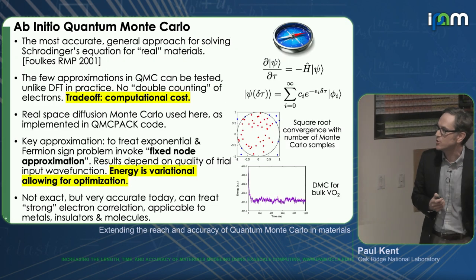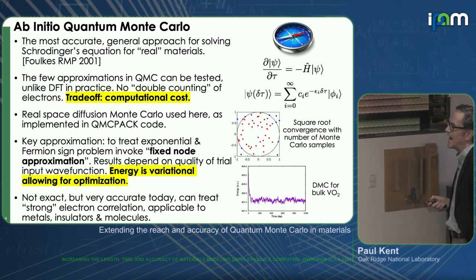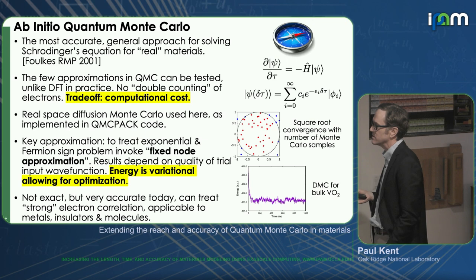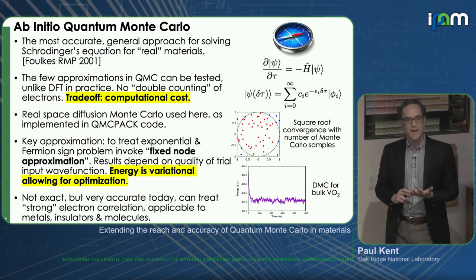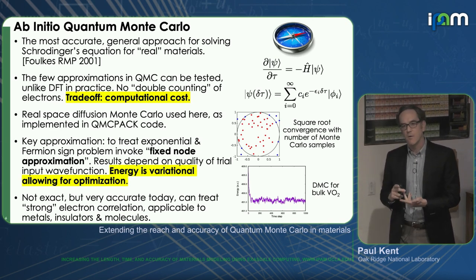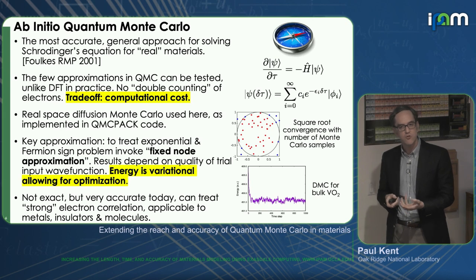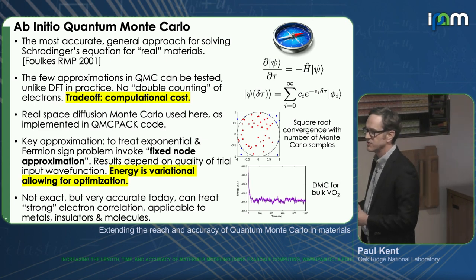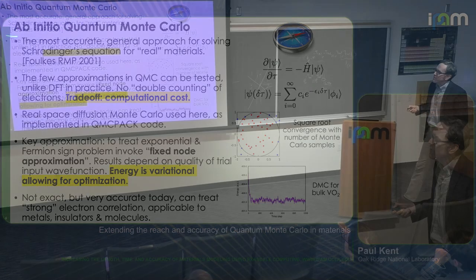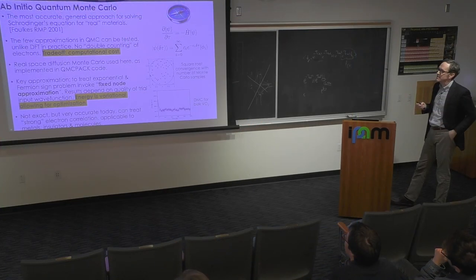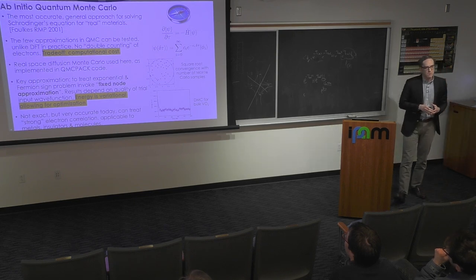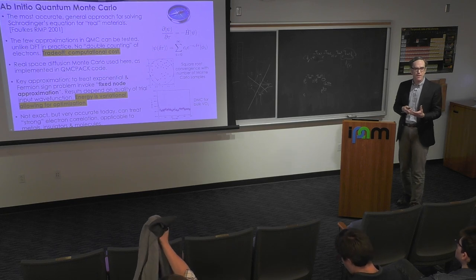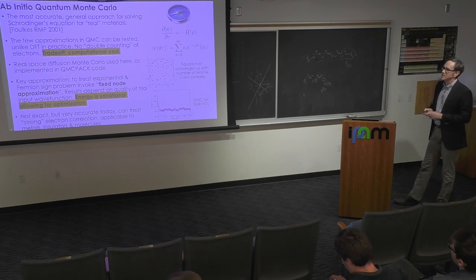That brings me to ab initio quantum Monte Carlo, which I'm just going to sketch out here. This is commonly said to be the most accurate general approach for solving Schrödinger's equation for real materials. What do we mean by general? It can work on metals, insulators, molecules. We're not restricted to high symmetry primitive cells — you can do defects, interfaces, and so on. Of particular interest is that the methods don't have many approximations in them. We know what they are and they are all in principle testable. This sets up the potential to spend more computer time and get steadily more accurate results. The trade-off, of course, is that to get this increased accuracy, we have to spend a lot more on the computational side.